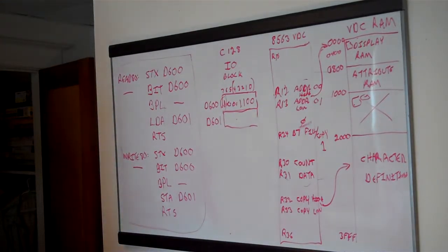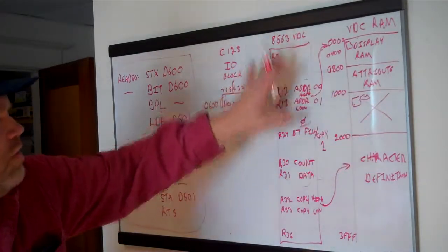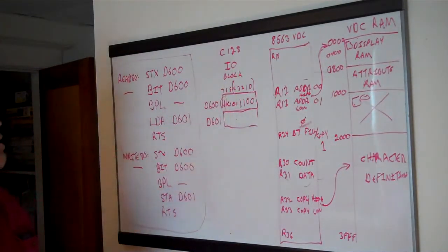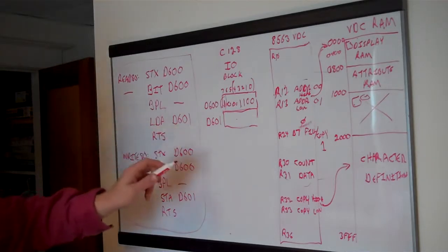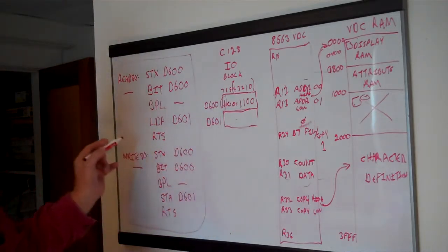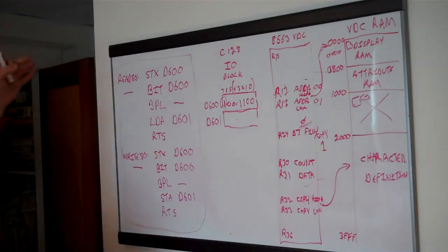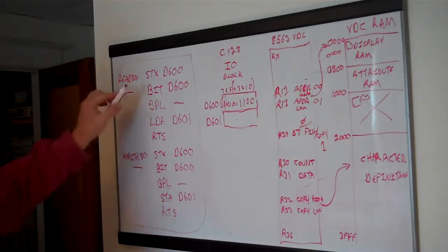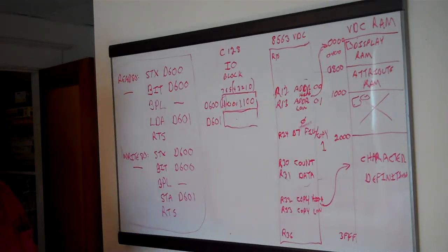So that covers the basics. The main thing to understand is you can't talk to the VDC RAM directly — you can't even talk to its registers directly — you have to go through D600 and D601. You start by writing READ80 and WRITE80 routines, then wrap those to do whatever you want: write values to register 13, register 30, and so on. Every read or write to a VDC register goes through one of those two routines. If you have any questions, ask in the comments — and now we'll be ready to start writing some code using these. Thanks for watching.